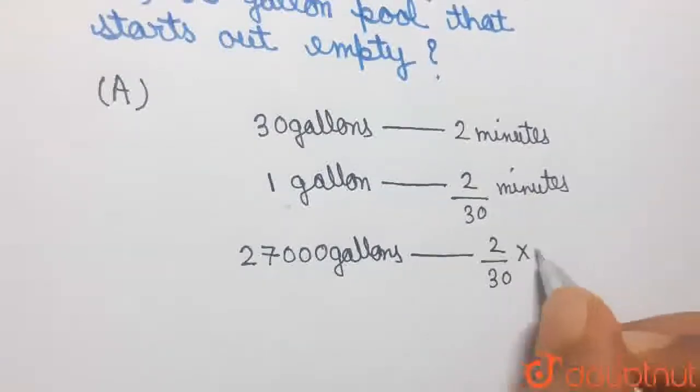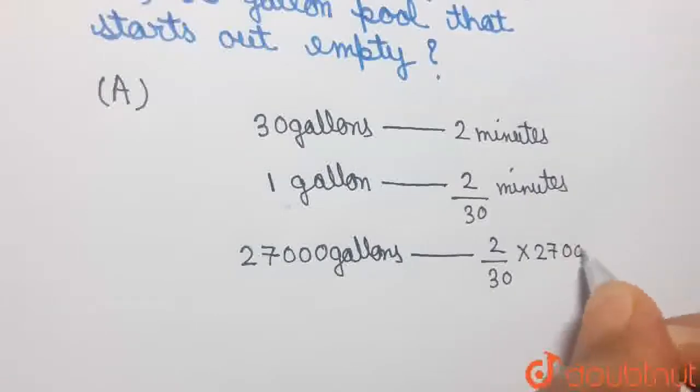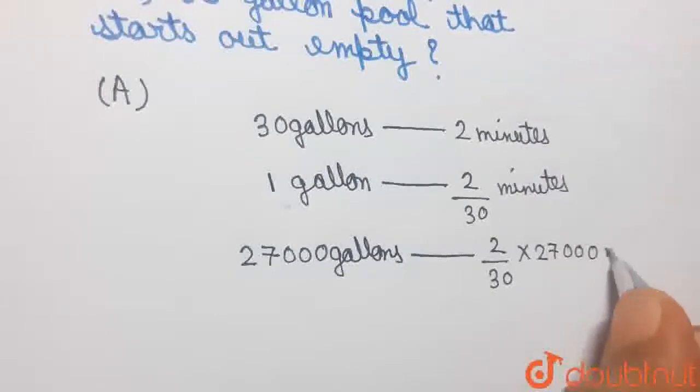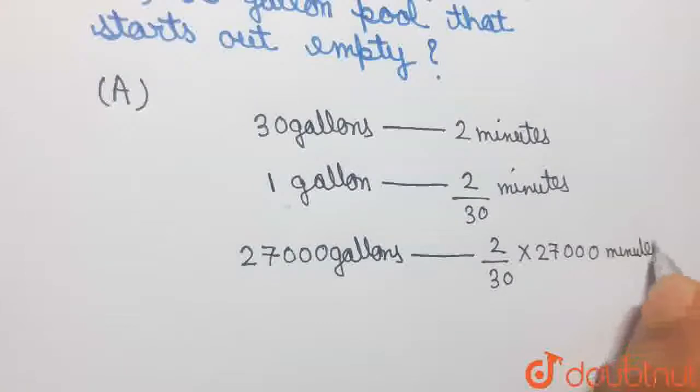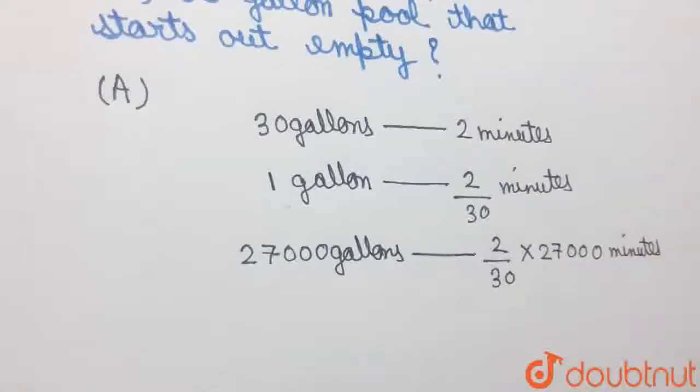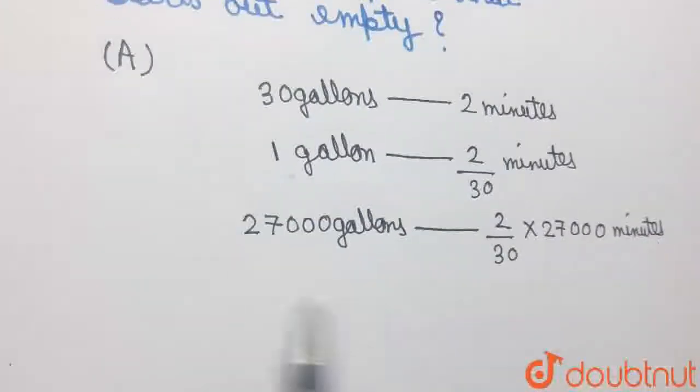Hence, 2 by 30 into 27,000 minutes. So this is the time in minutes that the inlet pipe will take to supply 27,000 gallons of water.